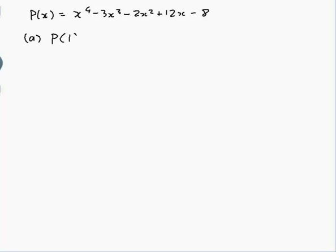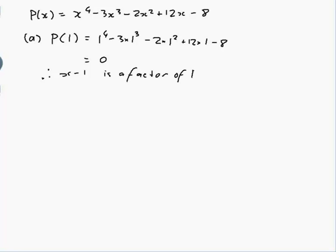So P(1) = 1⁴ - 3 times 1³ - 2 times 1² + 12 times 1 - 8. So 1 minus 3 is minus 2, minus 2 is minus 4, plus 12 is 8, minus 8 is 0. So therefore, x minus 1 is a factor of P(x).